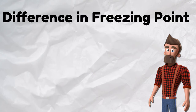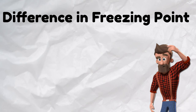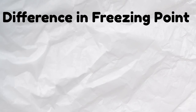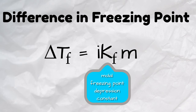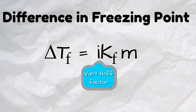So, by how much does the freezing point change by adding solutes? It can be calculated by the following formula. The difference in the freezing point is equal to i times Kf times m, where Kf is the molar freezing point depression constant, M is the molality, and i is the Van't Hoff factor, or the ionization number.